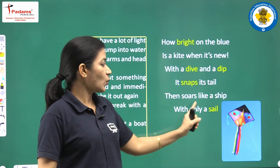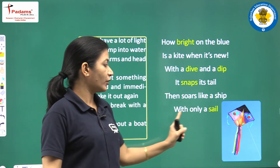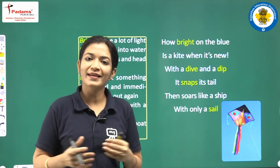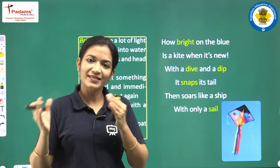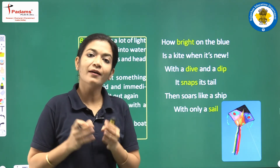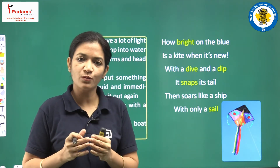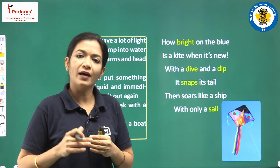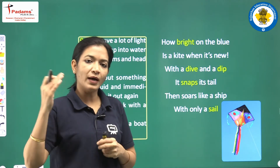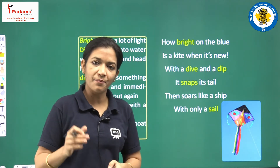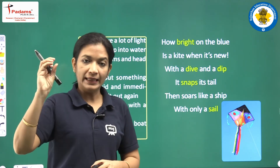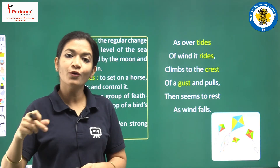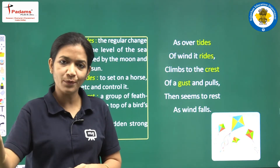'Then soars like a ship with only a sail.' The kite moves similarly to a ship moving on tides along with its sails. The poet here compares a kite to a ship.